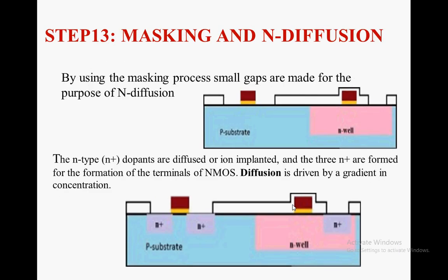Using the masking process, small gaps are made for the purpose of N-type diffusion. N-type dopants are diffused or ion implanted, and N+ regions are formed for the terminals of NMOS. Diffusion is driven by a gradient in concentration — there is an ion concentration gradient that drives this process.